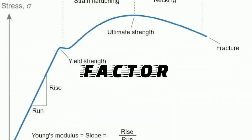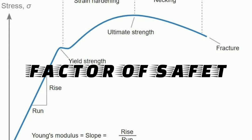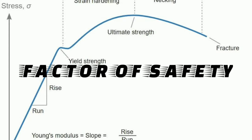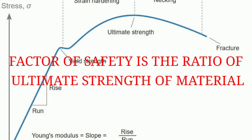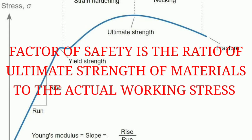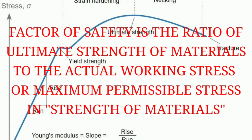Hello everyone, today we will be discussing about factor of safety. In factor of safety, a number of formulas are there because it depends on different types of problems. The factor of safety is the ratio of ultimate strength of materials to the actual working stresses or maximum permissible stresses, especially in strength of materials. That is the definition of factor of safety.